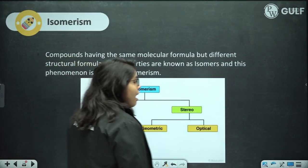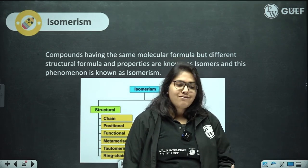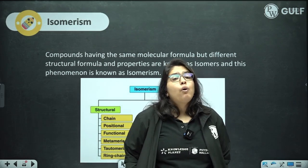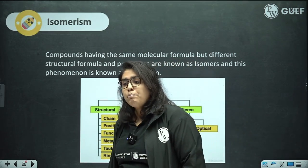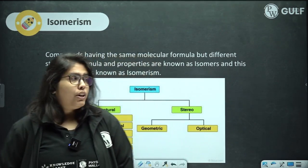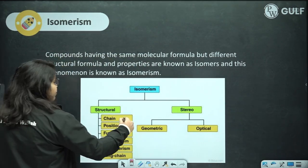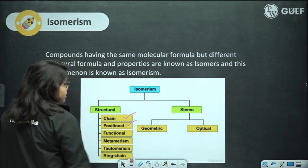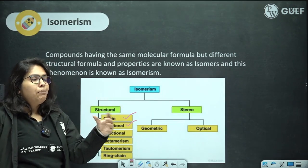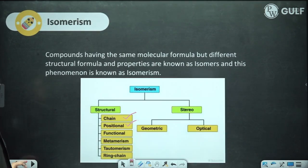Isomerism: 'iso' means same and 'mer' means unit — the structure and formula. Compounds which have the same chemical formula but different structures are called isomers. Isomerism is of two types, structural and stereo; in your portion, you have chain isomerism and positional isomerism. Chain and positional isomers have the same chemical formula but different structures.